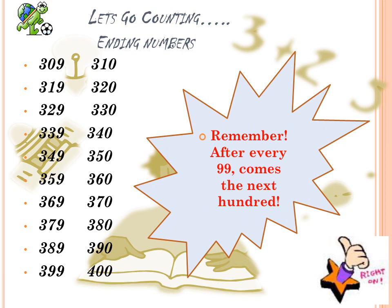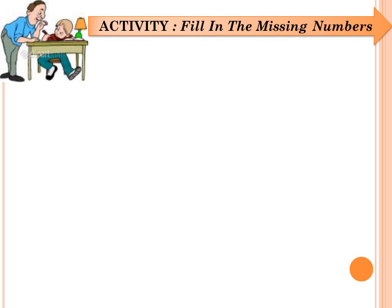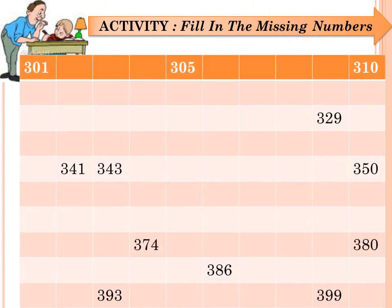Always remember that after every 99 comes the next 100. The first number in the activity is 301, the next is 302, followed by 303, then 304, and all like that until you get to the last box. Trust you can do this.